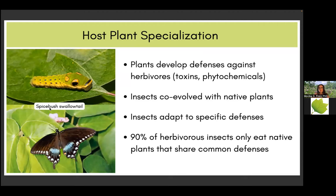Another important term to mention is host plant specialization. During evolution, plants developed defenses against herbivores — they don't want to be eaten completely, so they developed external and internal defenses, so-called toxins or phytochemicals, that make the plant toxic or give it a bitter, unpleasant taste. Insects evolved together with native plants and adapted to these specific defenses. Such adaptation takes a long time, so most insects only developed defenses to certain toxins, and therefore 90% of herbivorous insects can only eat native plants.